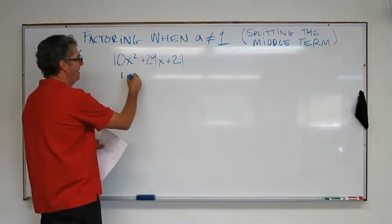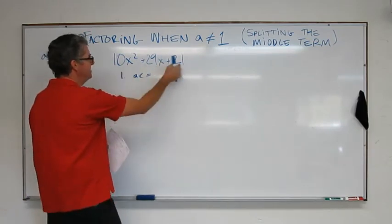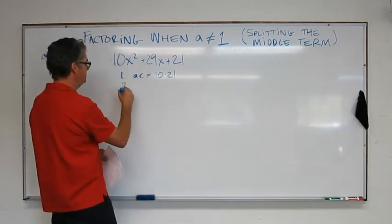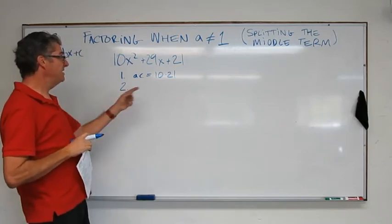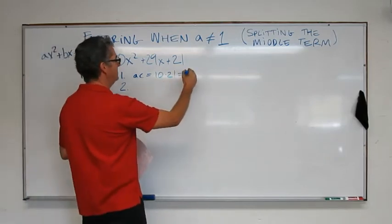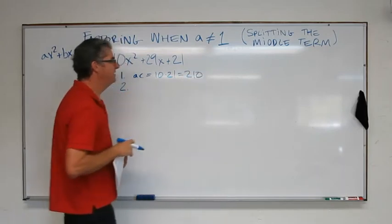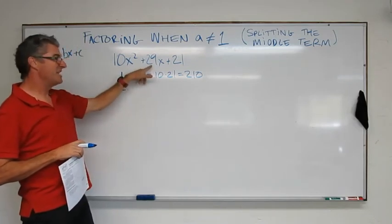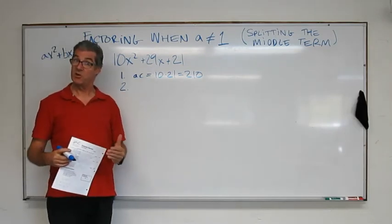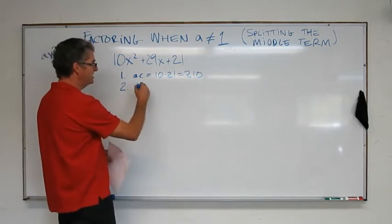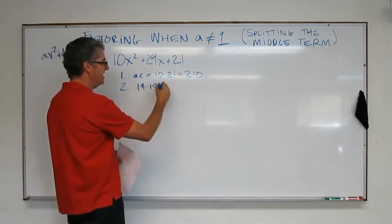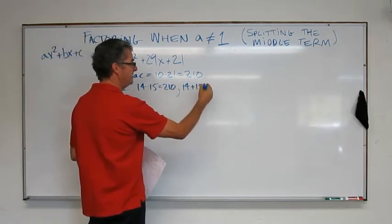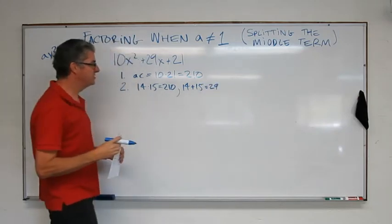Step 1. AC. That's going to be 10 times 21. 10 times 21. Step 2. We need a B. We need to split. Oh, let's finish that. That's 210. Okay. So now we need two factors of 210 that add up to 29. So this was a little bit more tricky. But the two factors are 14 times 15 because that adds up to 210 and 14 plus 15 because that adds up to 29. So those are my two factors.